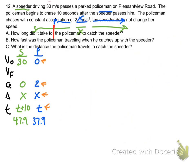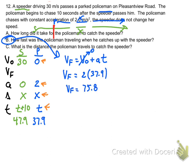Now we need to do part B. How fast was the policeman traveling when he catches up? Well, we can use the policeman's information. We now know three things, and we can find v final equals v zero plus at. So the final velocity of the police officer: initial velocity is zero, acceleration is 2, time is 37.9. So the final velocity is 75.8 meters per second.